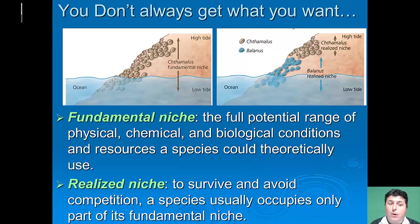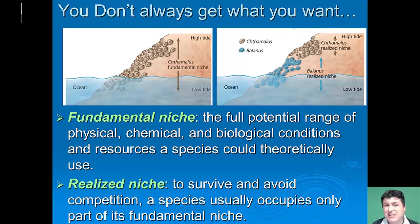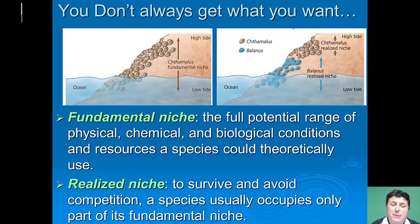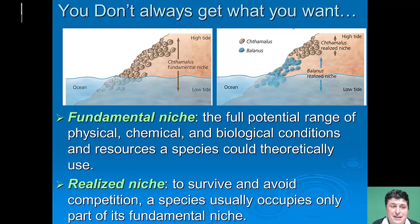In nature, you don't always get what you want. The full potential range of physical, chemical, and biological conditions and resources that a species can theoretically use is referred to as its fundamental niche. But in order to survive and avoid competition, a species usually only occupies a certain part of its fundamental niche, which is referred to as the realized niche.